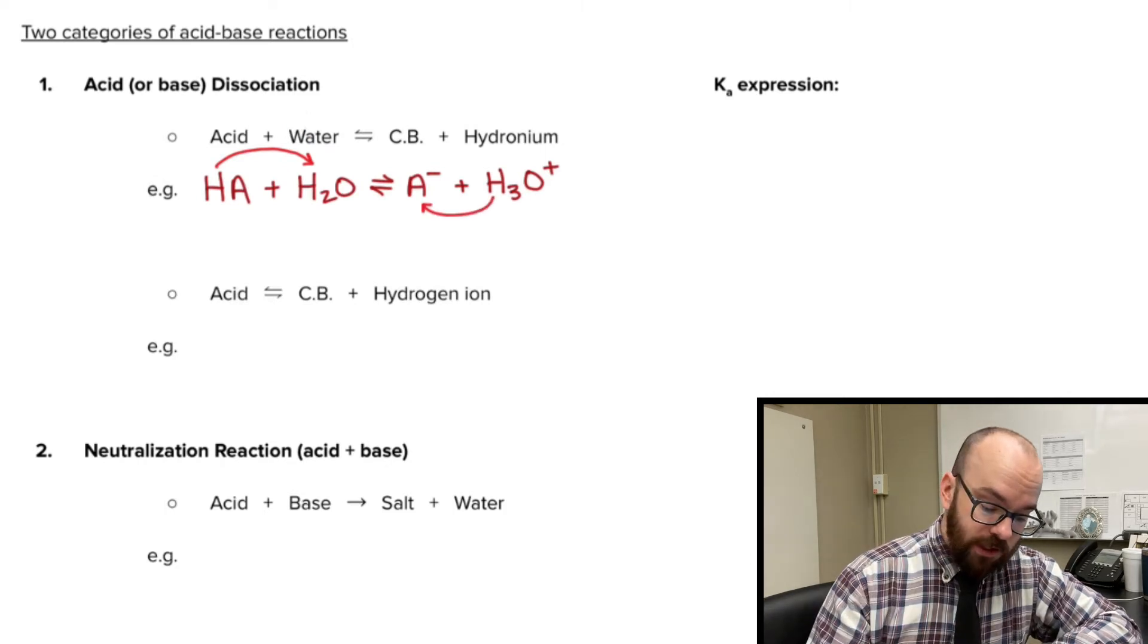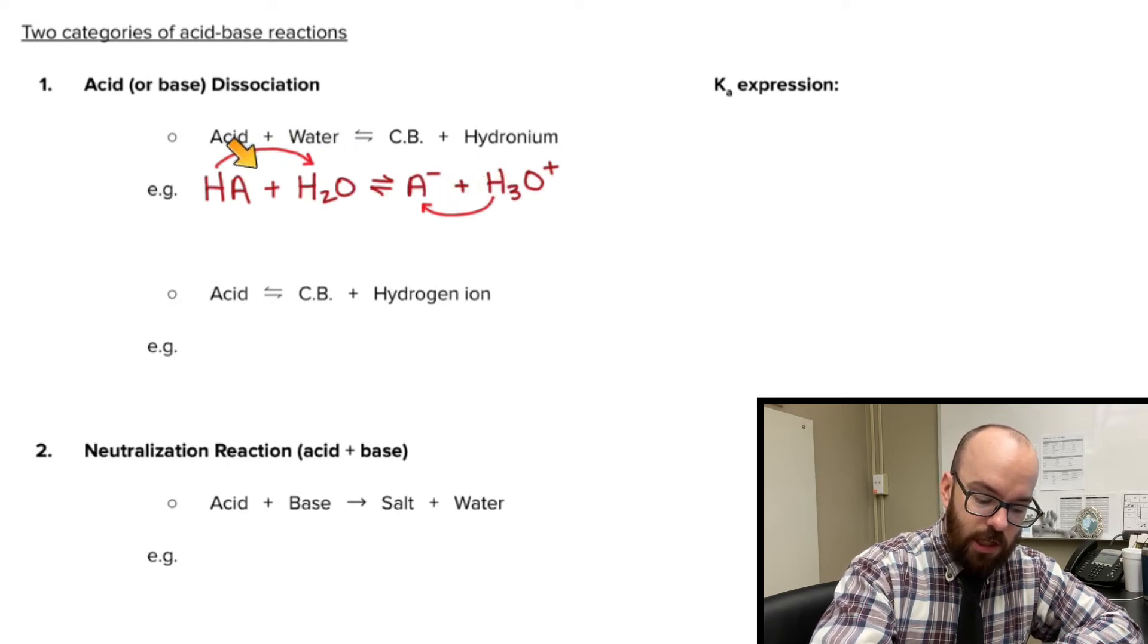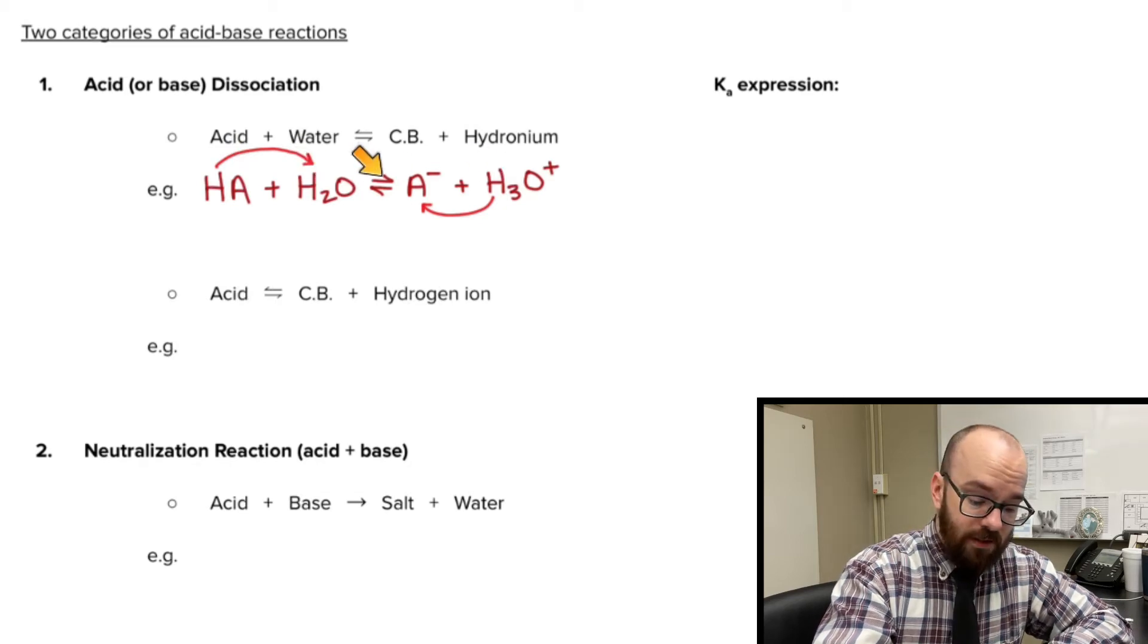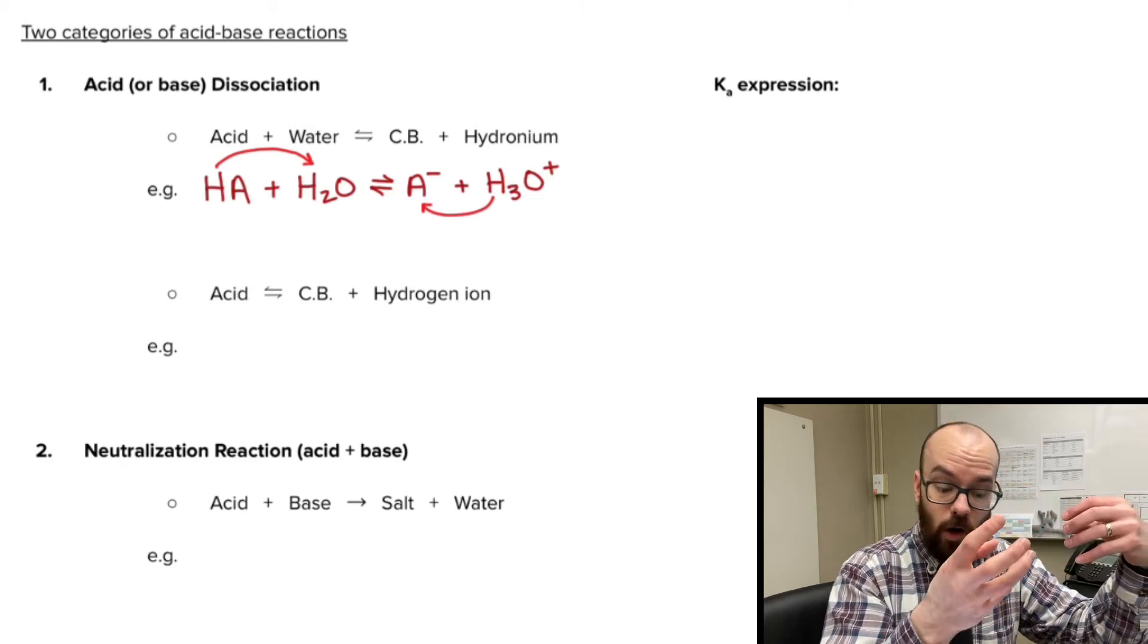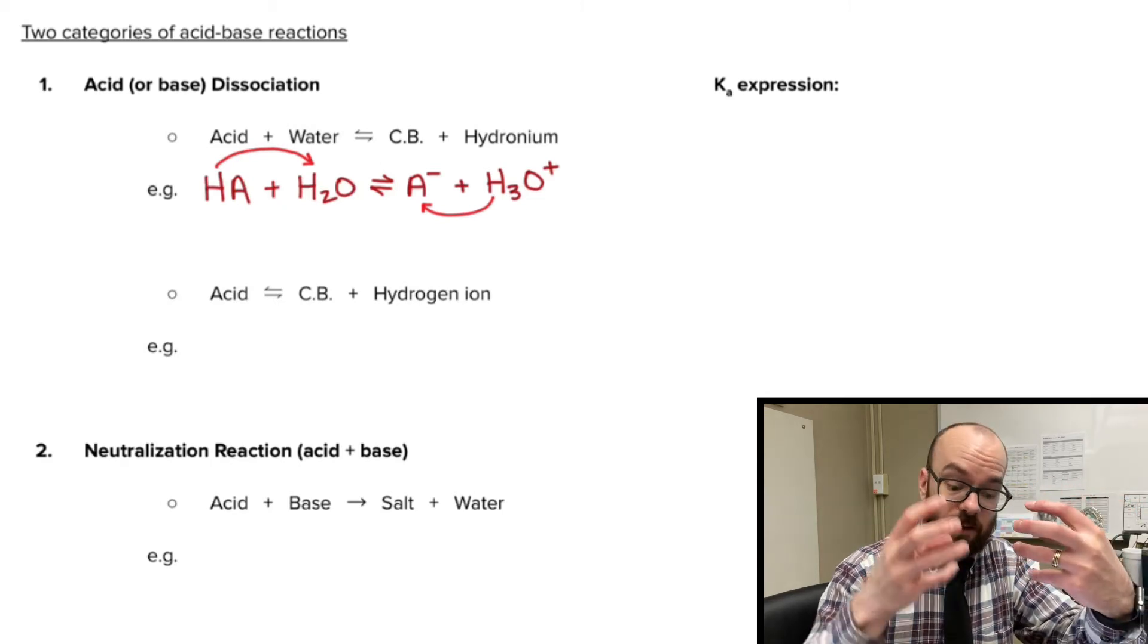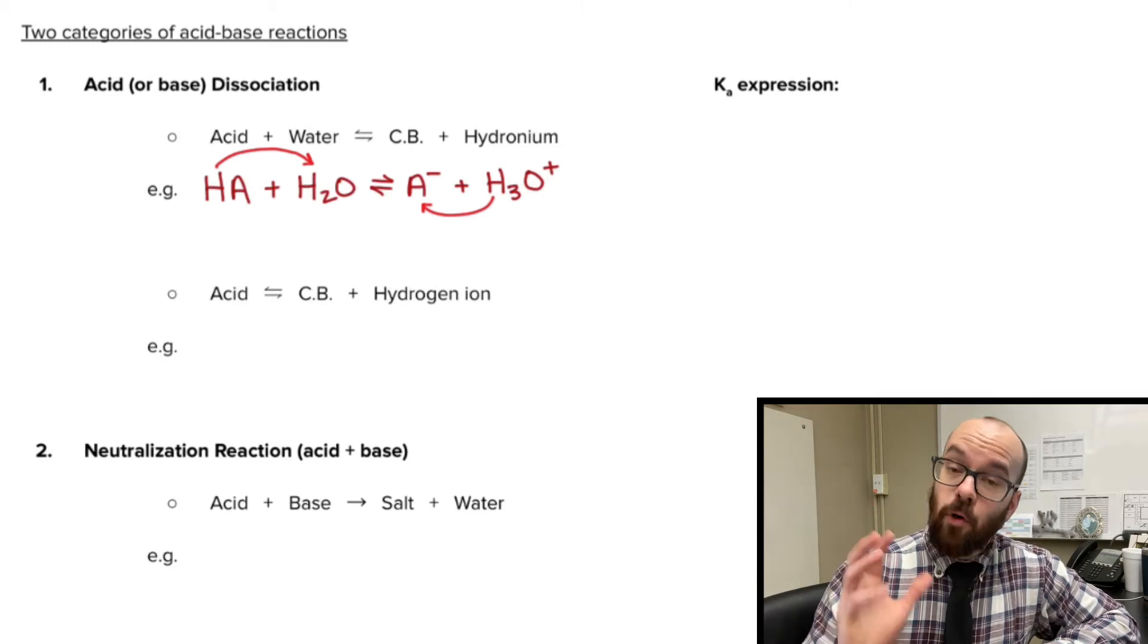Now, if you went in reverse, then this would have to take one of its hydrogens and transfer back to the A-, making HA, and leaving water behind from there. And of course, as a weak acid, this is going to be in equilibrium. We're going to have some of the HA in water form, and we're going to have some of the A- in hydronium form.